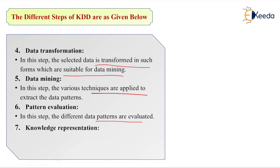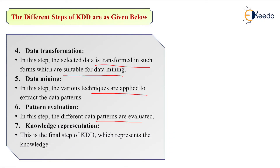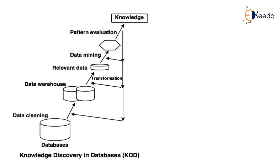Seventh is knowledge representation, which is the final step of KDD. We represent the knowledge — that means we are predicting the final value that the data is giving. Like accuracy or hyperparameter tuning tools. Using those, we can find which feature selection technique we are going to use. So this is the basic structure of KDD.